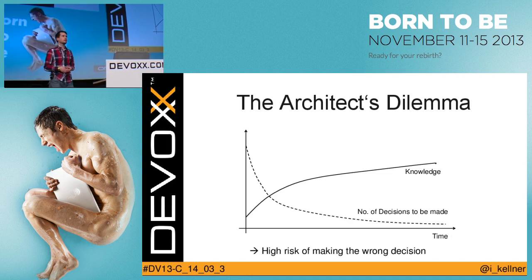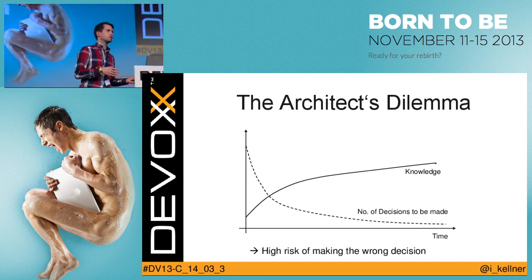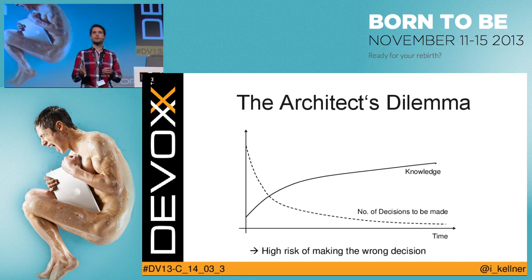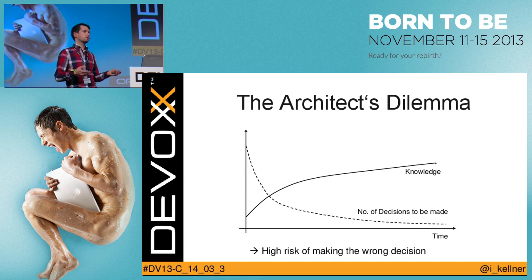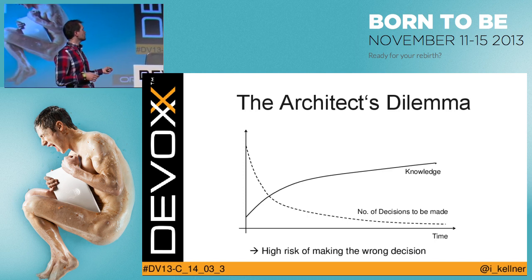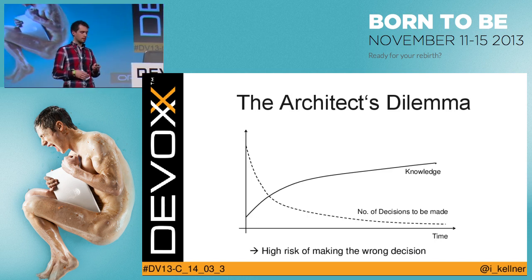The dilemma that we face as architects is that at project start there's a huge number of decisions to be made: what are the abstractions, what are the customer requirements, what performance does the system need, which frameworks to use? But we don't really know much about the problem domain yet. Our knowledge is building up over time, which is the complete opposite to the number of decisions we have to make. So there's a big risk that we make the wrong decisions at the start.